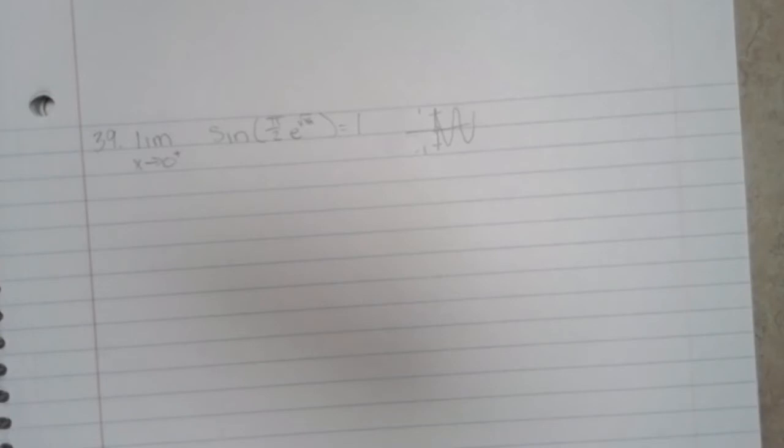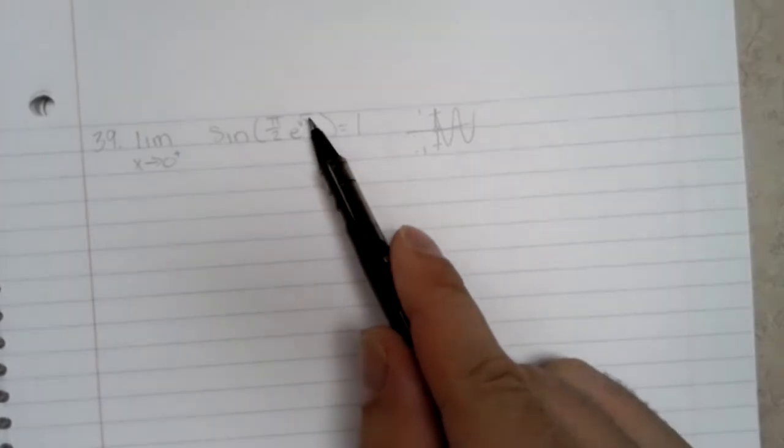So we've got products and compositions of continuous functions, so stuff should be continuous. Except that as you noticed we can't approach x from the negative direction. This was 39 and 2.5.